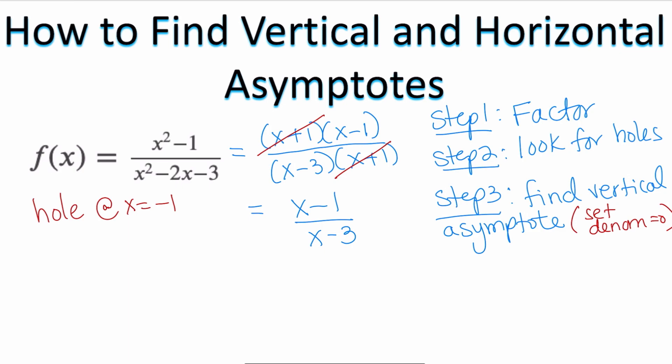If I take a look at what I have, I have x - 3 as my denominator. If x - 3 is set equal to 0, that means x = 3 is going to be my vertical asymptote.